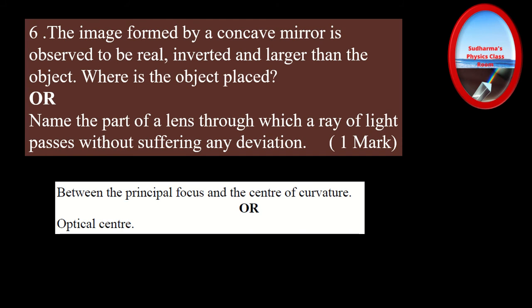Question number six: the image formed by a concave mirror is observed to be real, inverted, and larger than the object. Where is the object placed? This question has a choice — so make sure you read both questions properly before deciding, because decision-making is important. In the first reading you may feel one question is easy, but if you switch later you lose time. Make sure you are confident before you start writing.